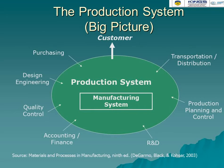Quality control checks the raw material condition as well as the finished product condition. Accounting and financing fixes the price for each individual component. Research and development looks at how to improve the nature and needs of an existing product. Production planning and control manages how all manufacturing processes are controlled and how to improve process quality. Transportation and distribution dispatches the product to the customer — that is the big production system.